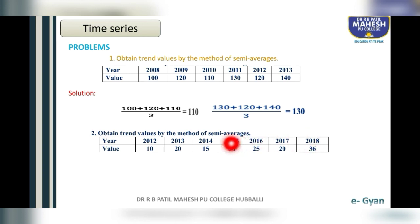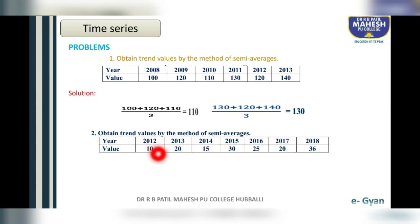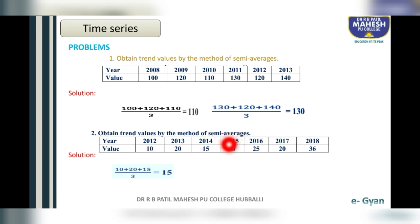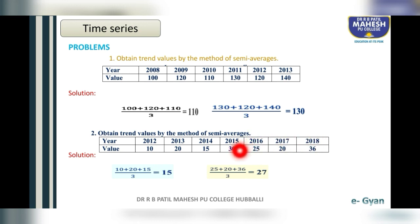Since there are seven values, which is an odd number, how do we make two equal parts? We leave out the middle year 2015. From 2012 to 2014 is the first group, and from 2016 to 2018 is the second group. For the first group: 10 plus 20 plus 15 divided by 3 equals 15. For the second group: 25 plus 20 plus 36 divided by 3 equals 27.